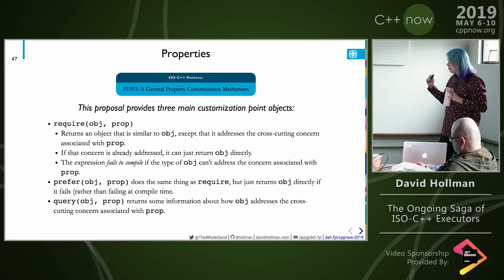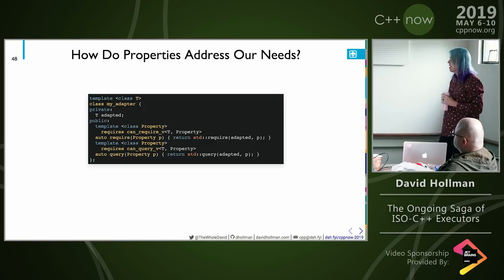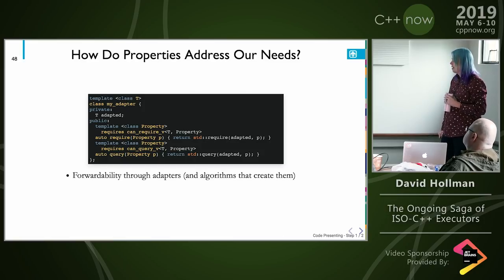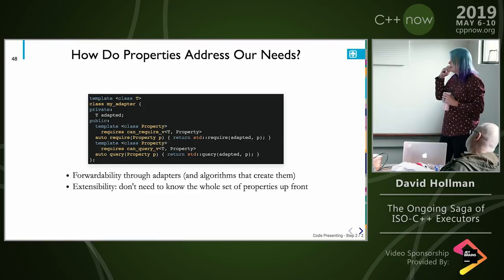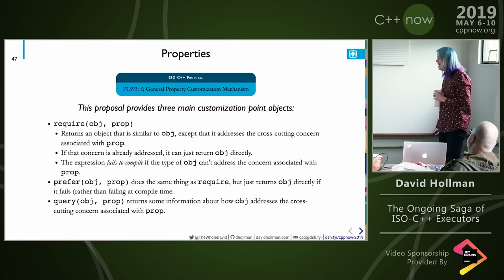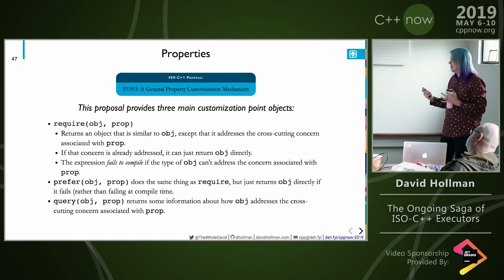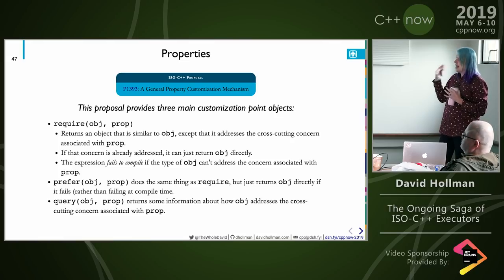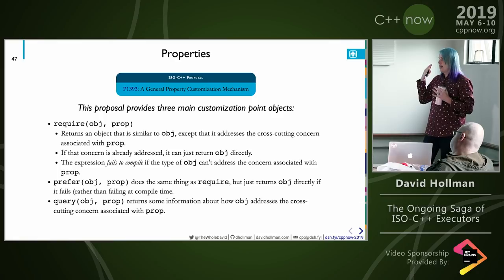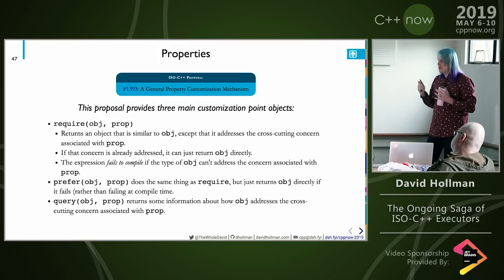The library surface area of this proposal is really pretty small — just these three things — but the implications are pretty intense. Note that 'require' as a name is interesting because 'requires' is now a keyword in C++20. I would be fine if it ends up being renamed to 'require_property' or something less confusing. But there is a nice aspect: this is an analog of 'requires' but for non-semantically necessary attributes.